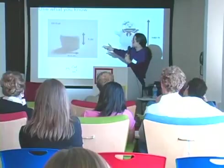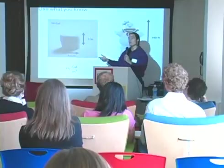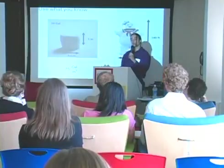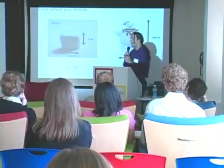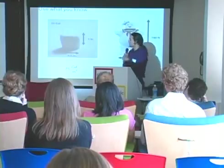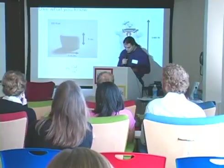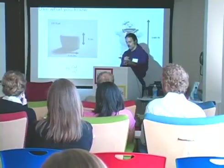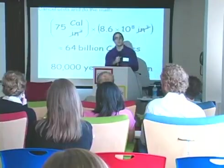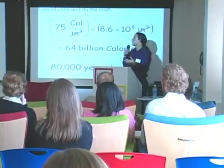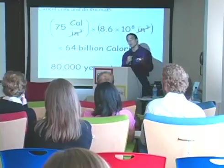Looking at Mr. Stay Puft, he's about the size of a 10-story building. Each story is about 14 feet, so he's about 140 feet tall. He's a little less than half that amount wide — so about 60 feet wide and 60 feet deep. Multiplying all those numbers together gives his total volume on the order of 500,000 cubic feet, which I can also convert to cubic inches. Then the last part is just canceling units: multiply calories per cubic inch by cubic inches, and you get the total number of calories — about 64 billion calories.